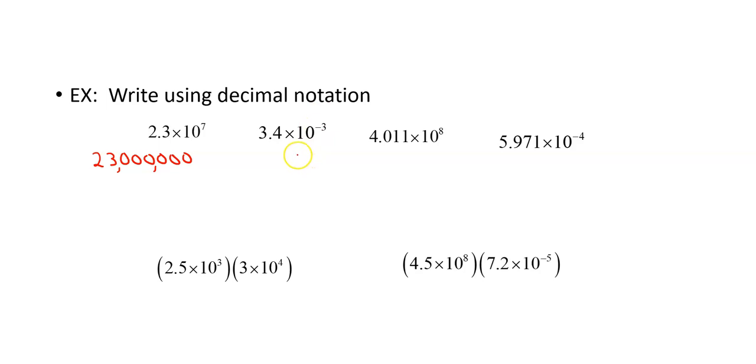3.4 times 10 to the negative third. I've got my 3 and my 4. That decimal point was between the 3 and the 4, so I move it over to the left now. One, two, three. Anything that has a gap gets a zero, so 0.0034.